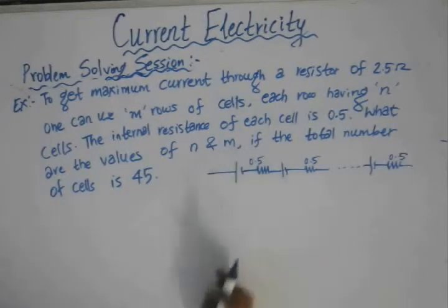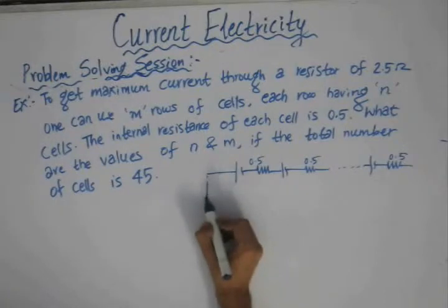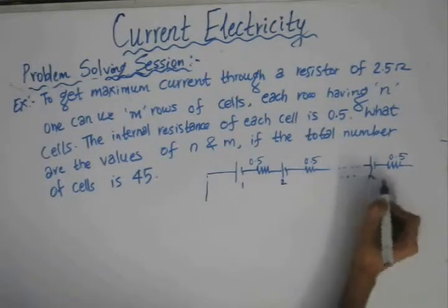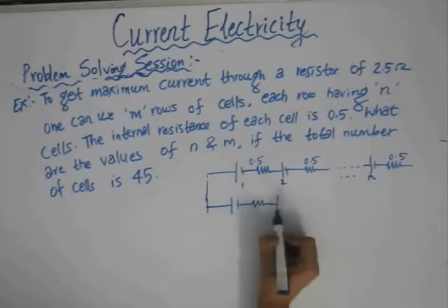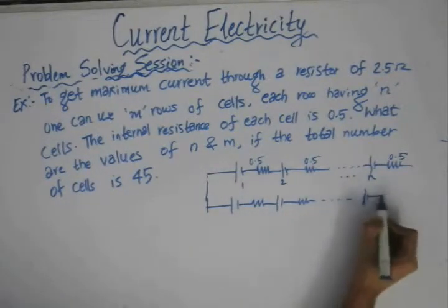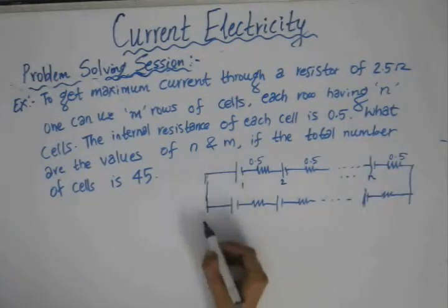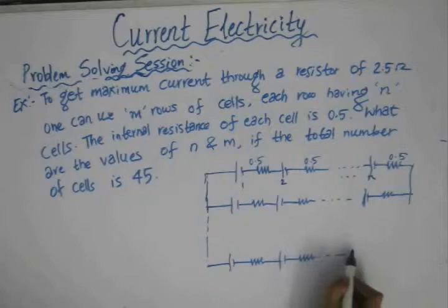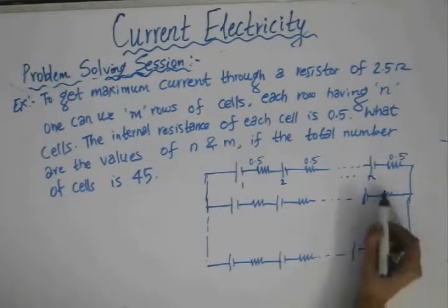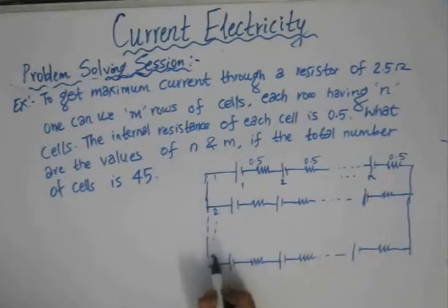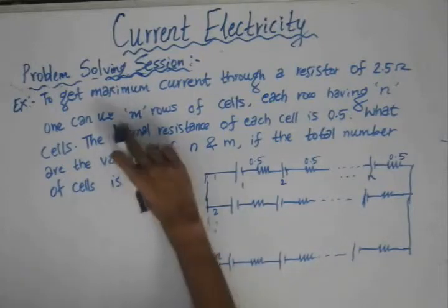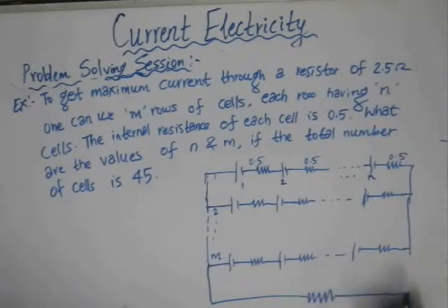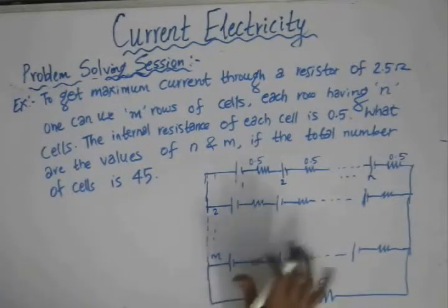There is some value for the EMF. We have N cells: first cell, second cell, up to the Nth cell. And like this, we have M rows connected in parallel. This is the first row, this is the second row, and like this we have M rows. Through this combination, we have an external resistor of 2.5 Ohm connected to this combination.